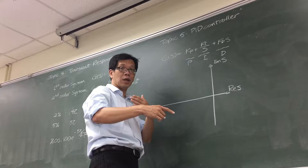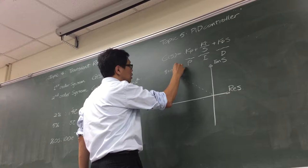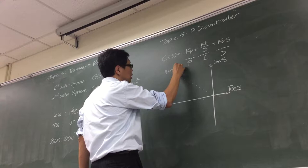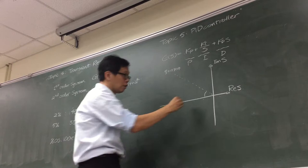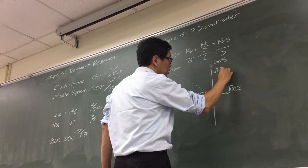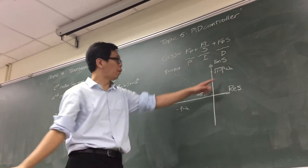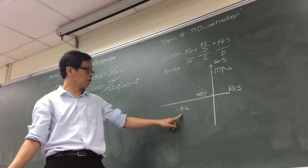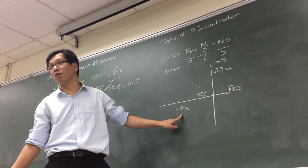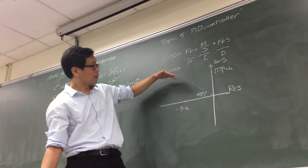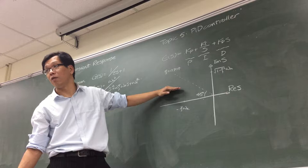We will talk about root locus today. In the S-domain, the damping ratio requirement corresponds to an angle — 0.707 gives equal real and imaginary parts, which means 45 degrees. If the pole is located below the 45-degree line, the damping ratio is greater than 0.7 and overshoot is less than five percent. If the pole is in the region above this line, the damping ratio is too small and overshoot exceeds five percent.